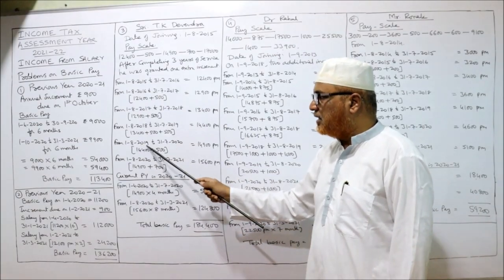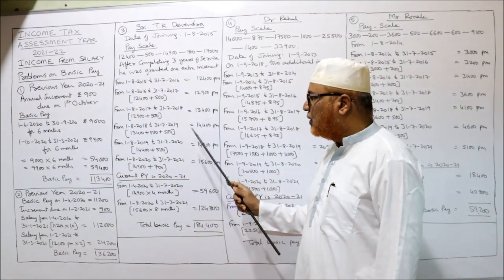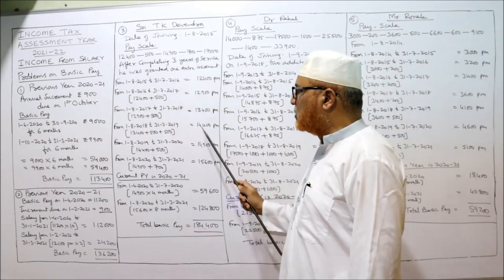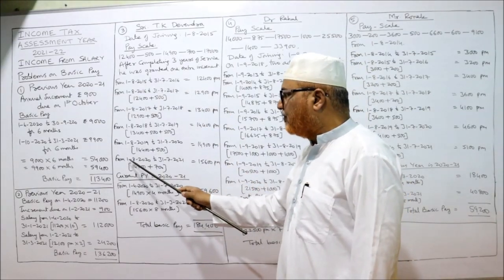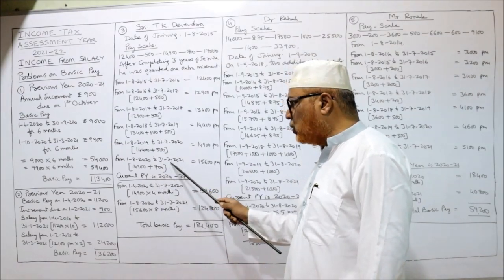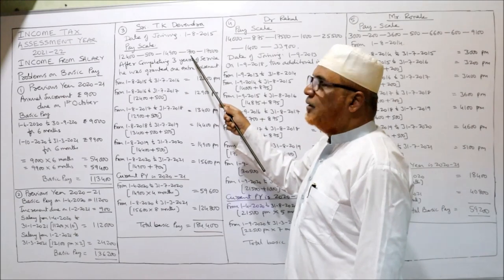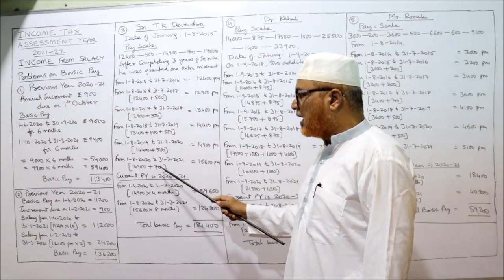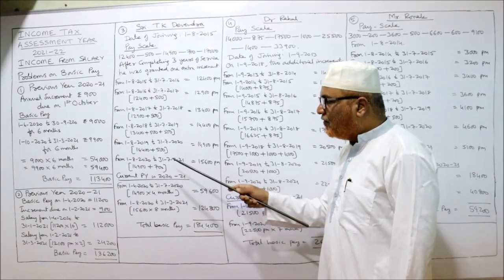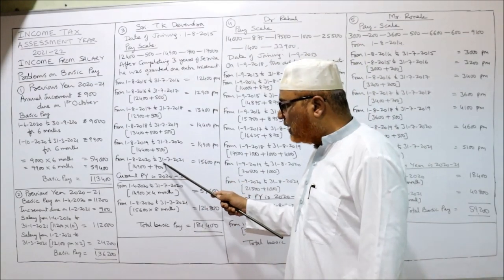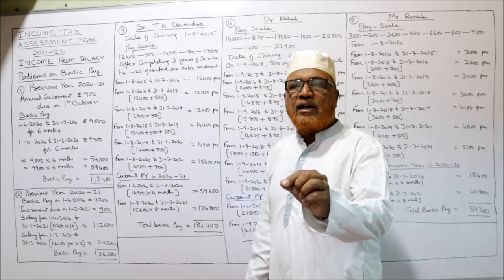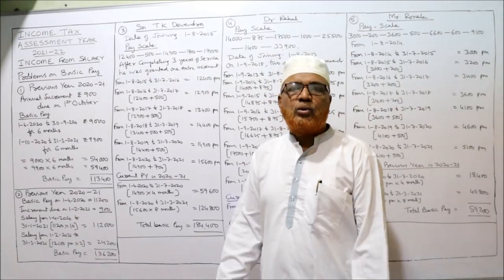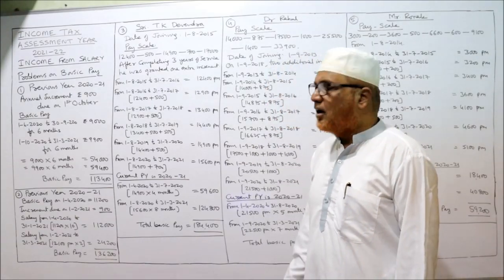Next year: 1st August 2019 to 31st July 2020 — 14,400 + 500 = 14,900. We have now reached the 14,900 break point. Next year: 1st August 2020 to 31st July 2021 — increment changes to 700 — so 14,900 + 700 = 15,600. We need data only up to 31st July 2021, and we have it.